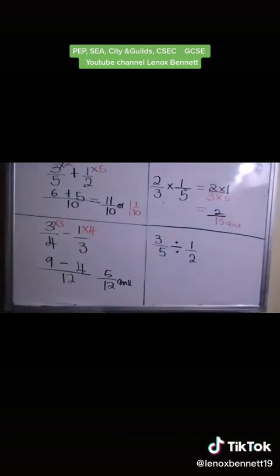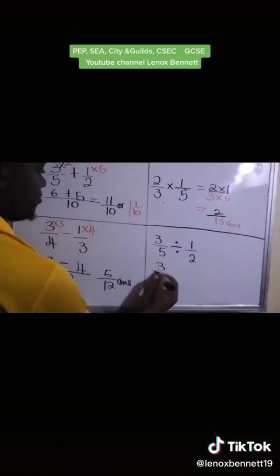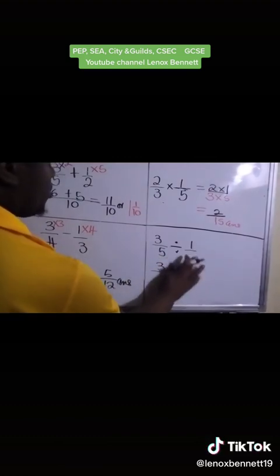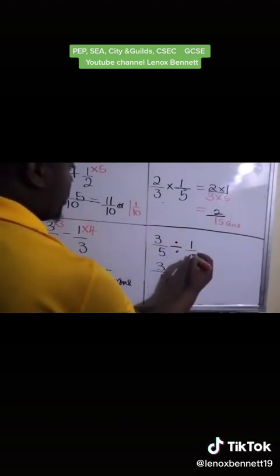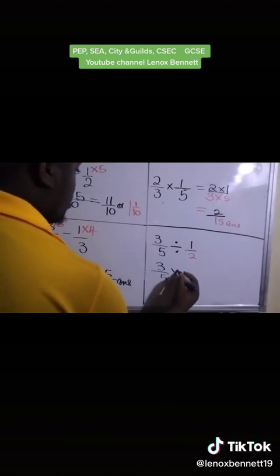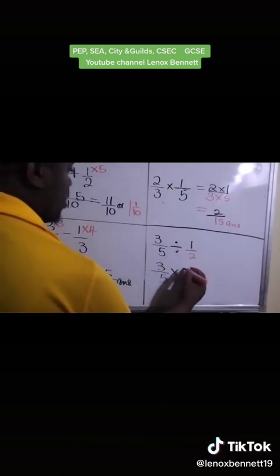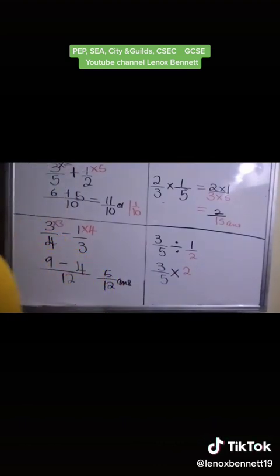Let's look at the division now. So we have 3 fifths divided by a half. The rule states that we write back the first fraction. But we're going to reciprocate. So we change the sign to multiplication and we reciprocate. So 2 goes up the top now and 1.